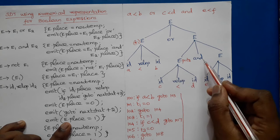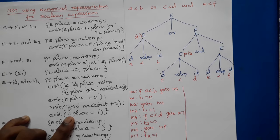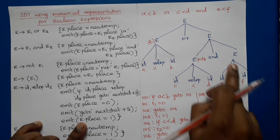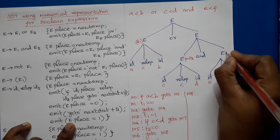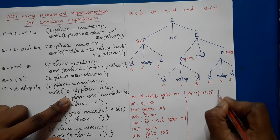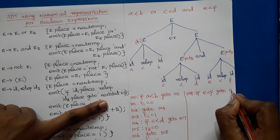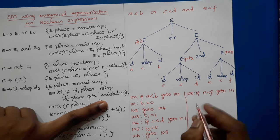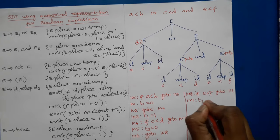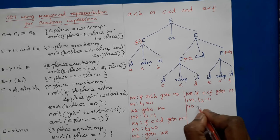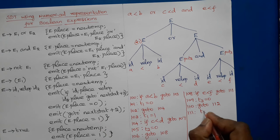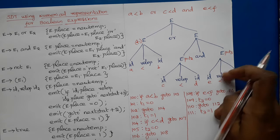Then ID relop ID (E < F) is reduced to E. E.place = T3. Next index is 108. Emit produces: 108: if E < F goto 111; 109: T3 = 0; 110: goto 112; 111: T3 = 1.